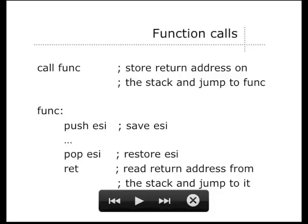If you have a function, you call it with a call instruction. When the function executes, it usually saves some registers onto the stack, and when it finishes it restores those registers. This is so the calling code can assume that registers like ESI are not modified by the function — since all code shares the same registers, you don't want a function to mess up the register contents you had before the call. At the end of the function, a return instruction reads the return address from the stack and jumps back to the place where the call instruction was.